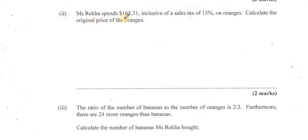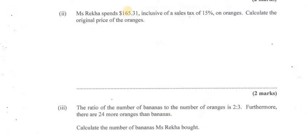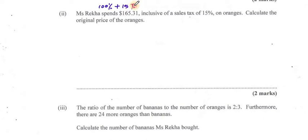Miss Rekha spends $165.31, which includes sales tax of 15% on oranges. Calculate the original price of the oranges. This amount includes sales tax of 15%. The original amount for the oranges is 100% — the original amount is always 100% — but sales tax was added on, and that sales tax is 15%.